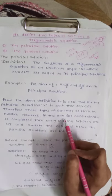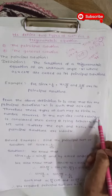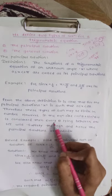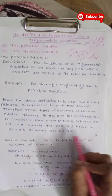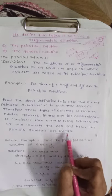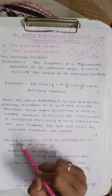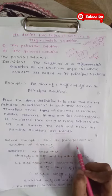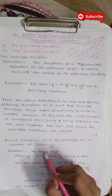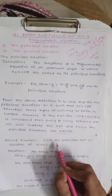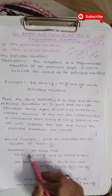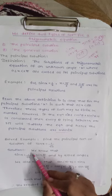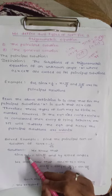However, if an equation like cos squared theta plus sin squared theta is equal to 1, which is a trigonometric identity, is considered, then every theta lying between 0 to 2 pi will satisfy the equation, and hence the principal solutions are infinite. Now, the first example: find the principal solution of sin x is equal to 1 upon root 2. We know that sin x is equal to 1 upon root 2 is equal to sin pi by 4, meaning the value of 1 by root 2 corresponds to pi by 4.